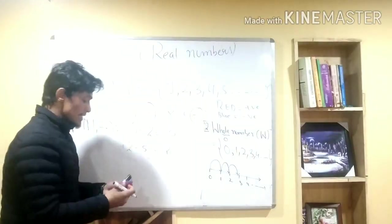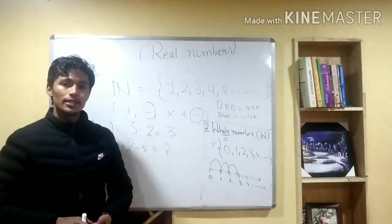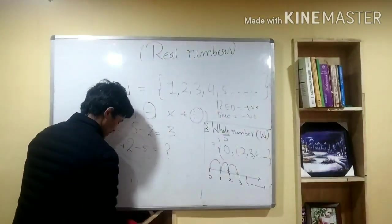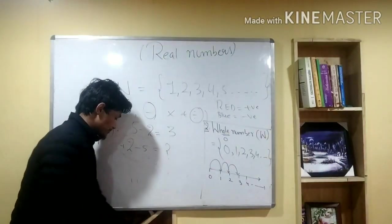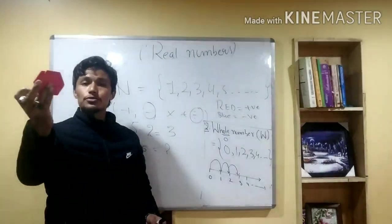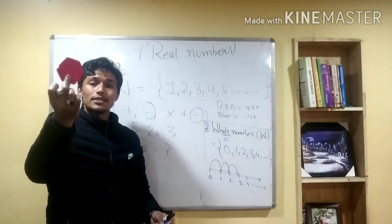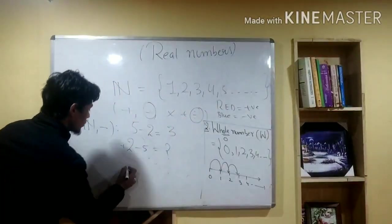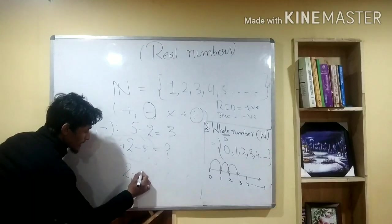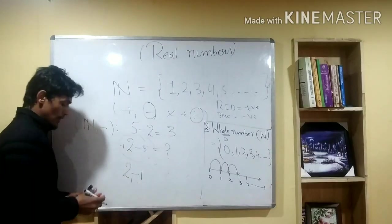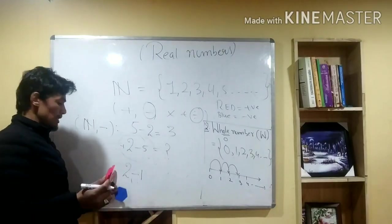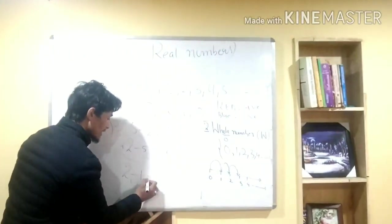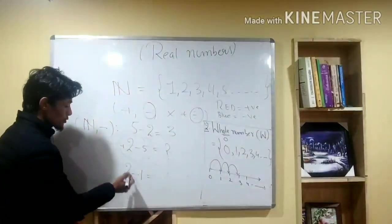Now suppose you have two positive and one negative. What happens? Two minus one — two positive, one negative — gives you positive one.